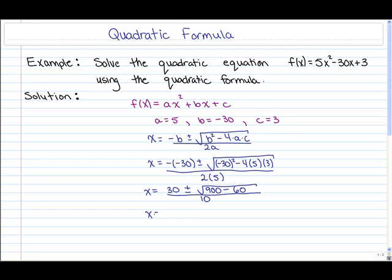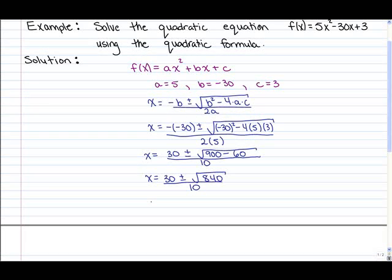So under the square root you should have a value of 840, and you'll notice that the square root of 840 doesn't work out to a nice solid value. So what we're going to do is leave it in this form. Now you could go and get an approximate answer by leaving it in decimal form, or you can leave it in this form right here, depending on what your instructor prefers.